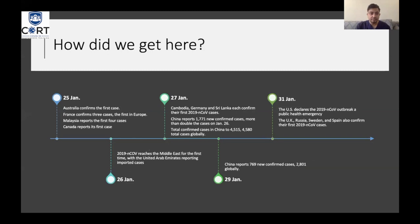Nepal confirmed its first case. On the 25th of January, Australia confirmed its first case; France confirmed three cases — the first in Europe; Malaysia confirmed four cases and Canada reported a case. The next day, the novel coronavirus reached the Middle East for the first time, with the UAE reporting the first imported cases. On the 27th of January, Cambodia, Germany, and Sri Lanka each confirmed their first cases. China reported 1,771 new confirmed cases — more than double from January 26th — bringing China's total to 4,515 and 4,580 cases globally.